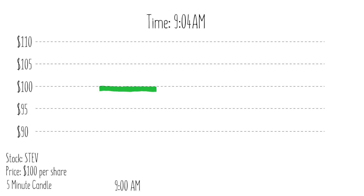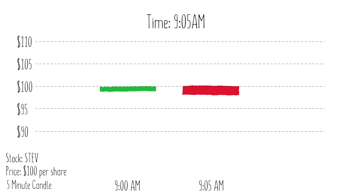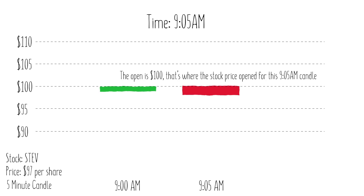It's 9:04 am and the clock just hit 9:05, so a new candle is born. Now, in order to determine if it's going to be a red candle or green candle, we need to see how the stock's price fluctuates. So at 9:05, Stev is at $100. And then if Stev drops to $97 and it's still 9:05 am, we'll see that the open is at the $100 mark.